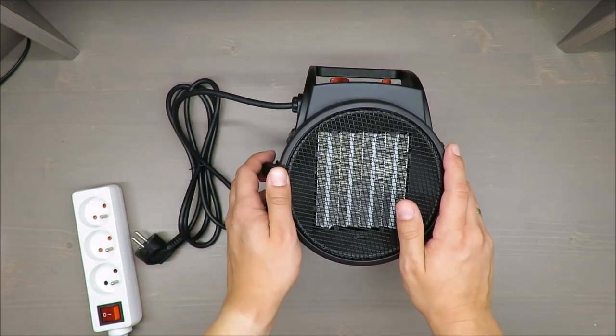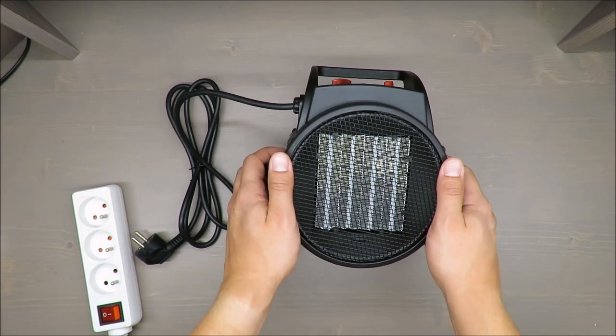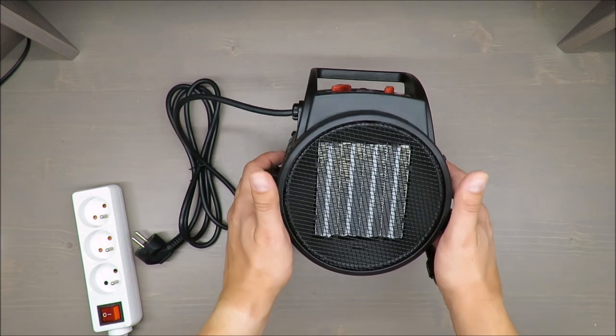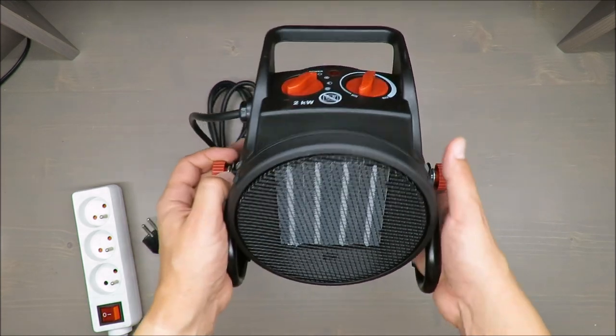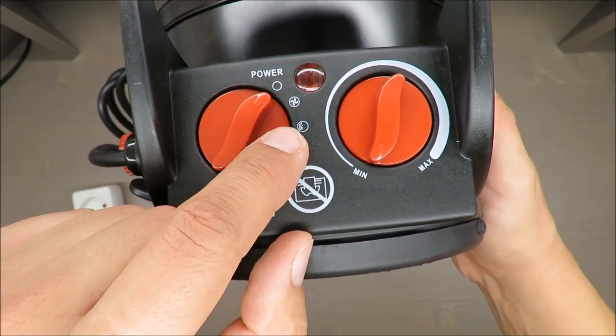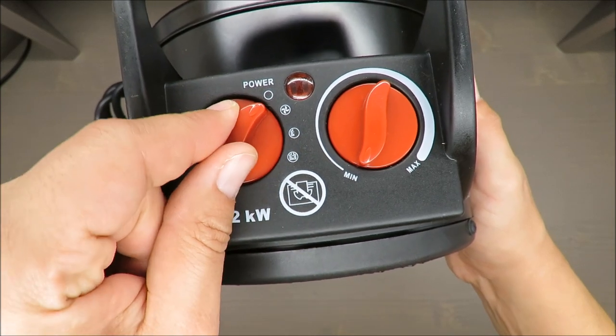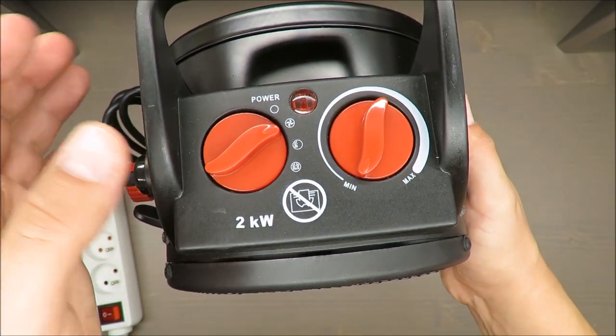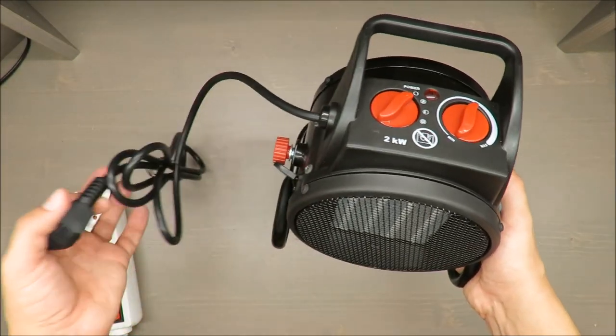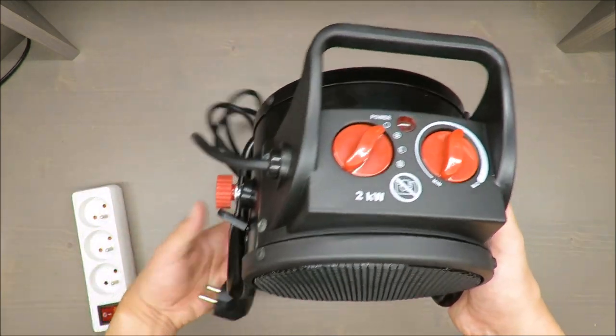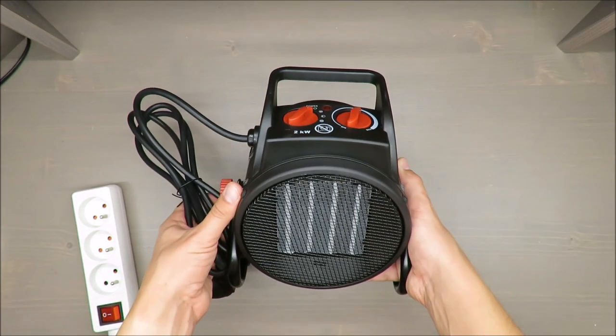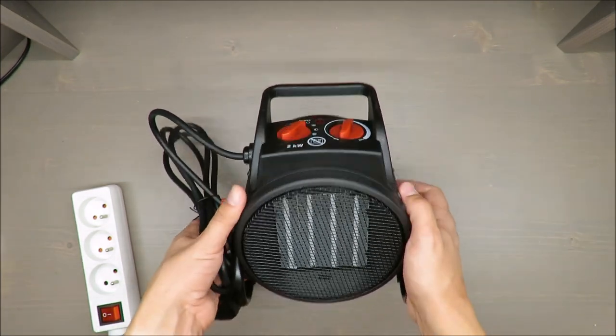Some basic features from the beginning: it has two heat settings, 1000 watts and 2000 watts. You can adjust by choosing one of these options. This is the 2000 watt option, this is 1000, this is regular fan without heating, and this is off. Another feature is 1.8 meters of cable. It's a simple device, so not many other features.